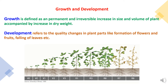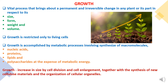Before studying sigmoid growth curve in detail, first we should have an understanding of growth and development. Growth is defined as a permanent and irreversible increase in size and volume of a plant accompanied by an increase in dry weight. Development refers to the qualitative changes in plant parts which reflect reproductive growth, like formation of flowers, fruits, falling of leaves, etc. Growth is a vital process that reflects the permanent and irreversible changes in plant parts with respect to its size.